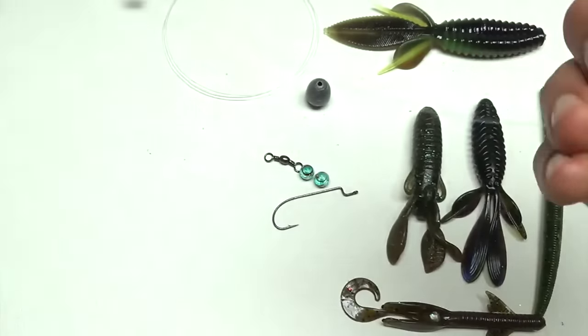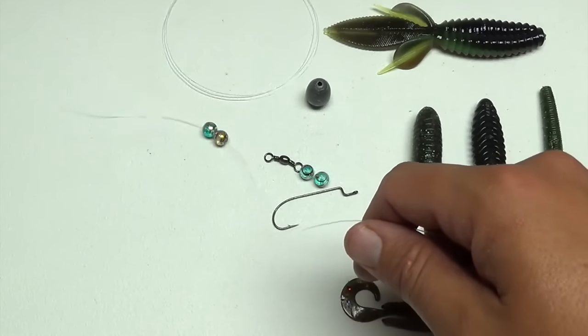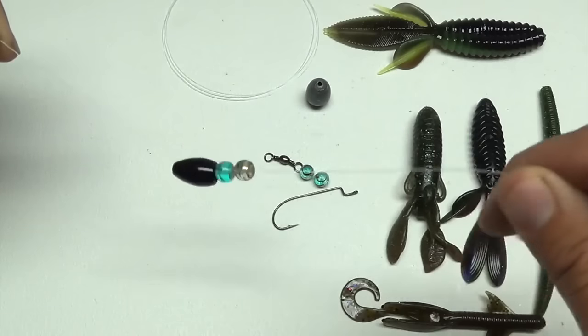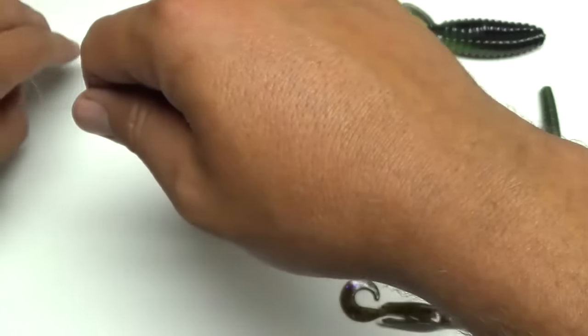What those beads do is, the weight hits against them and the beads hit each other. They just make a little noise, kind of like a sound that a crawfish would make. So just kind of a way to get the fish's attention.